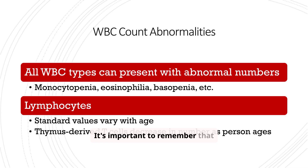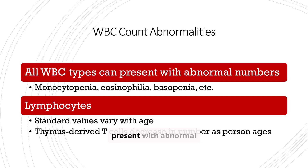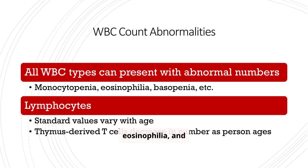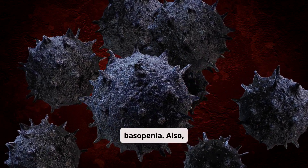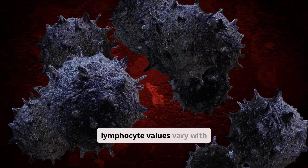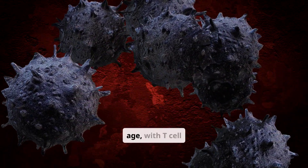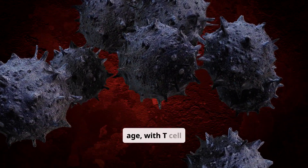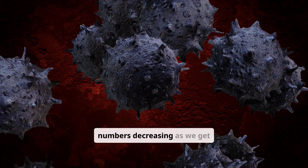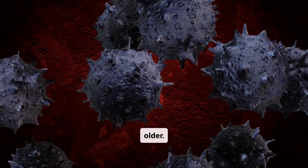It's important to remember that all WBC types can present with abnormal numbers. We can see monocytopenia, eosinophilia, and basopenia. Also, lymphocyte values vary with age, with T cell numbers decreasing as we get older.